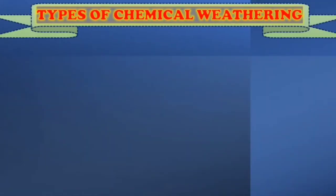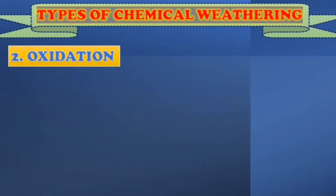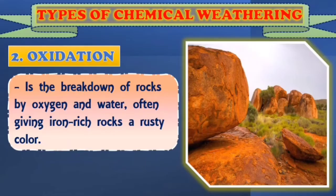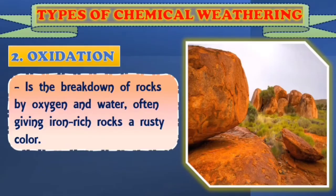Number two type of chemical weathering is oxidation — the breakdown of rocks by oxygen and water, often giving iron-rich rocks a rusty color. Oxygen in the air readily combines with the minerals in the rocks, particularly compounds of iron. When iron combines with oxygen, rust is formed. Therefore, the rust weakens the structures of rocks, making them more easily broken down through oxidation.